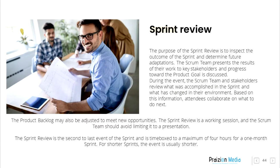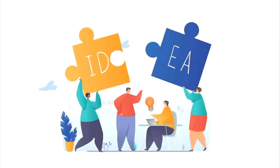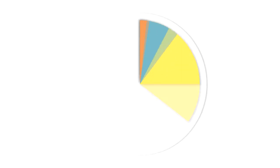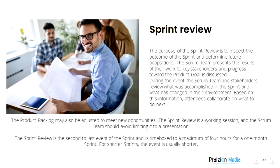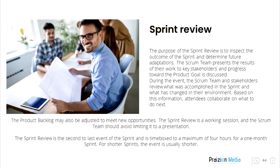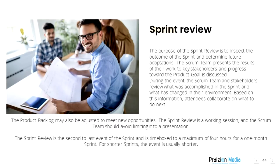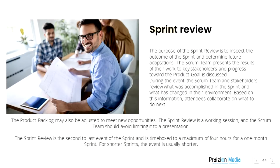Sprint Review. The purpose of the Sprint Review is to inspect the outcome of the Sprint and determine future adaptations. The Scrum Team presents the results of their work to key stakeholders and progress towards the product goal is discussed. During the event, the Scrum Team and stakeholders review what was accomplished in the Sprint and what has changed in the environment. Based on this information, attendees collaborate on what to do next. The product backlog may also be adjusted to meet new opportunities. The Sprint Review is a working session and the Scrum Team should avoid limiting it to a presentation. The Sprint Review is the second-to-last event of the Sprint and is time-boxed to a maximum of four hours for a one-month Sprint. For shorter Sprints, the event is usually shorter.